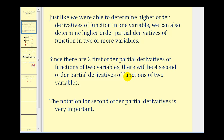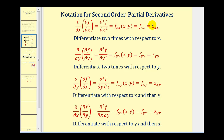The notation used for second order partial derivatives is very important. The notation here tells us to find the partial derivative with respect to x twice. Similarly, the notation here tells us to find the partial derivative with respect to y two times. These next two can be a little tricky at first — this notation tells us to find the partial derivative with respect to x, and then with respect to y in that order. Looking at the first two notations, we work from right to left.